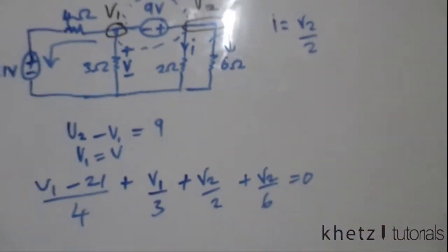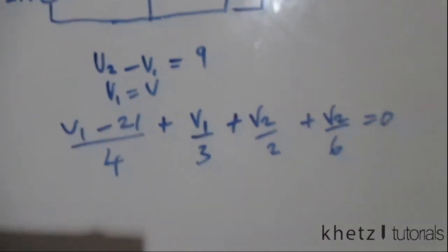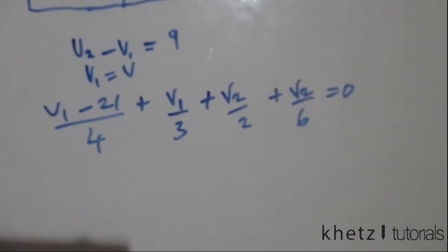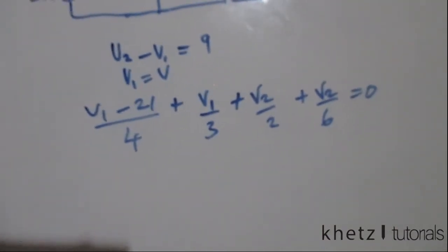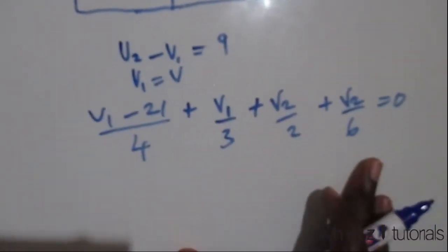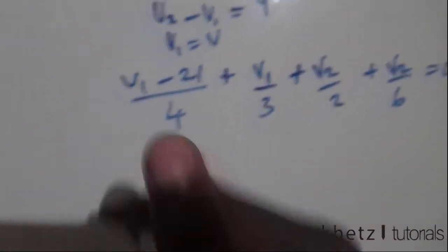Now let's simplify this and solve for v1 and v2, and then finally solve for i. Multiplying through by 12.